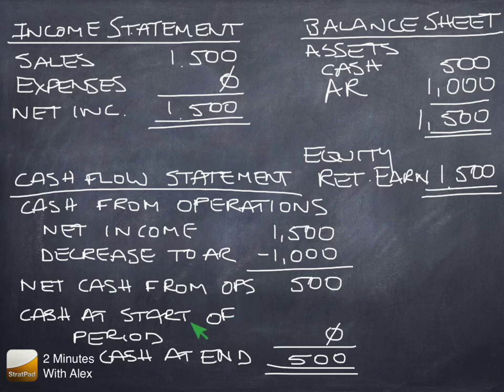We take a look at the cash at the start of the month, which was zero. And then you add the $500 that came in during the month leaves cash at the end of the month of $500.